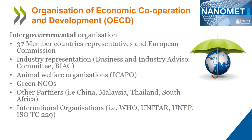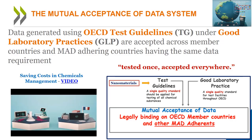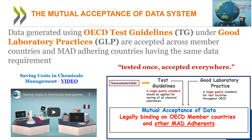As many of the same chemicals are produced in more than one country or are traded across countries, different national chemical control policies can lead to duplication in testing and government assessment, thus wasting the resources of both industry and governments. In addition, differences in regulation and test standards discourage research, innovation, and growth, and they increase the time it takes to introduce a new product onto the market. To avoid these inefficiencies, the OECD developed a system called the Mutual Acceptance of Data, or the MAD system.